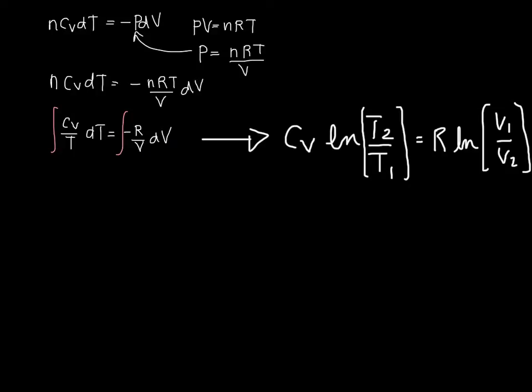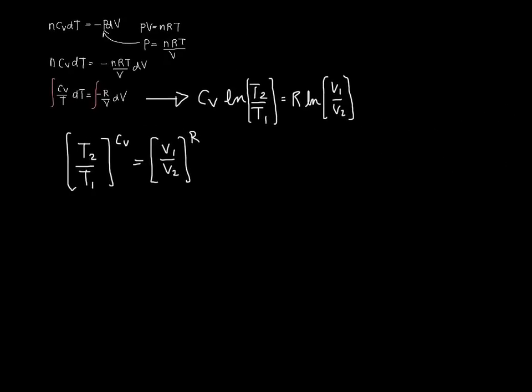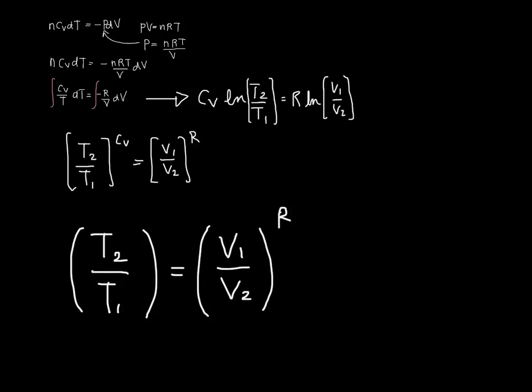Now we can simplify a little bit further by getting rid of the natural logs so that we have this relationship between the initial and final temperatures in the system. We end up with T2 over T1, the final temperature of the system divided by the initial temperature of the system, equals V1 over V2 to the power R divided by Cv.